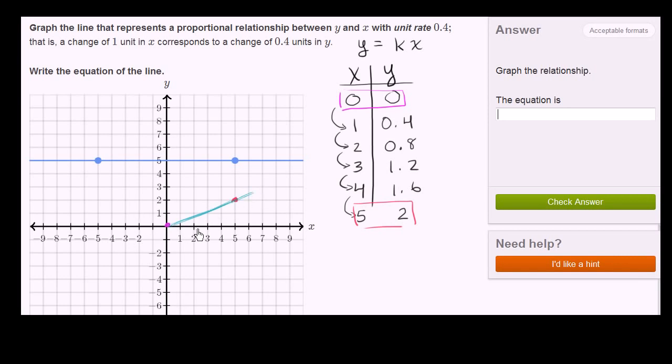And notice the slope of this actual graph. If our change in x is 5, so notice here our change in x is 5. You see that as well. When you go from 0 to 5, this change in x is 5. Change in x is equal to 5.